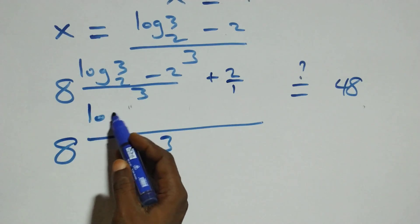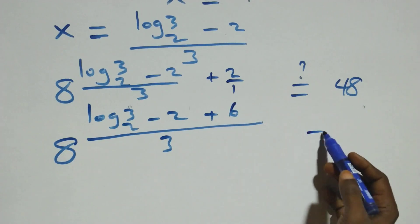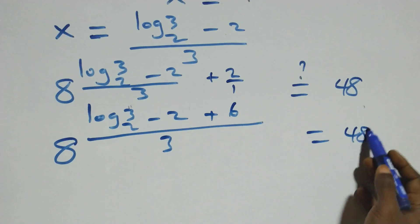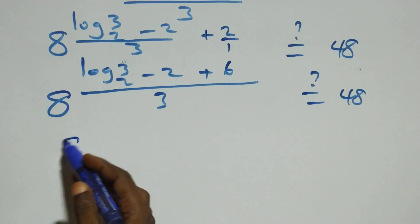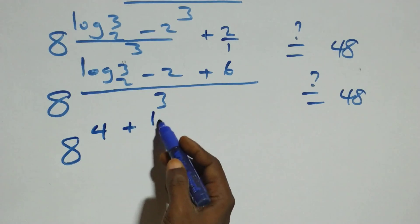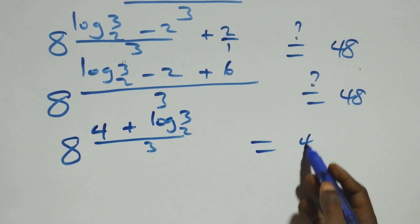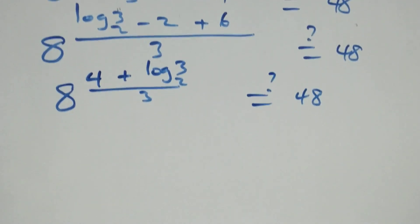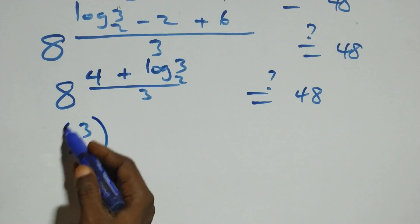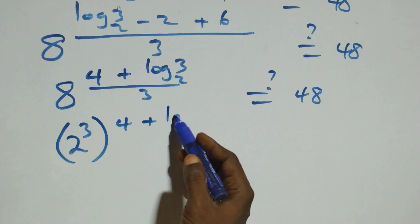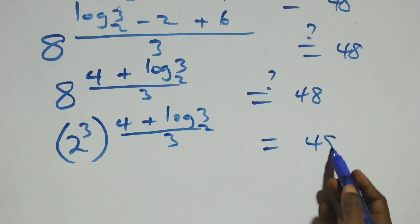We still have log 3 base 2 minus 2, then here we have plus 6. This equals 48 on this side. Then 6 minus 2 is 4. We receive this as 8 raised to power 4 plus log 3 base 2, all over 3, equals 48. This power multiplies and the 3 cancels each other. We have 2 raised to power 4 plus log 3 base 2, all over 3, equals 48.